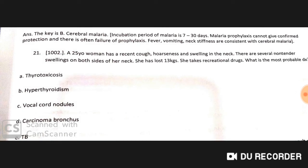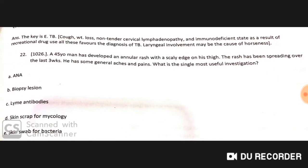A 25-year-old woman has recent-onset hoarseness and swelling in the neck, with several non-tender swellings on both sides. She lost 13 kg of weight and takes recreational drugs. The most likely diagnosis is tuberculosis. Hoarseness, tender cervical lymphadenopathy, immunodeficient state from recreational drug use, and weight loss all favor the diagnosis. TB laryngeal involvement causes hoarseness.